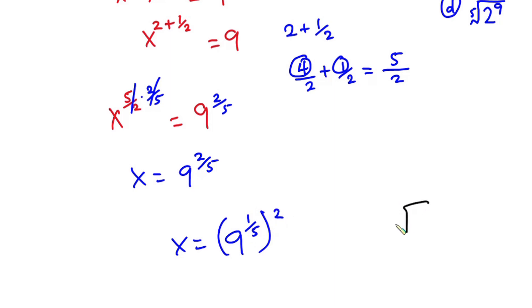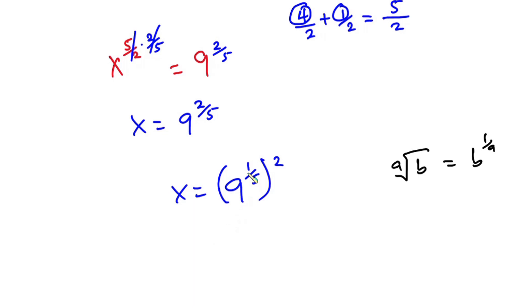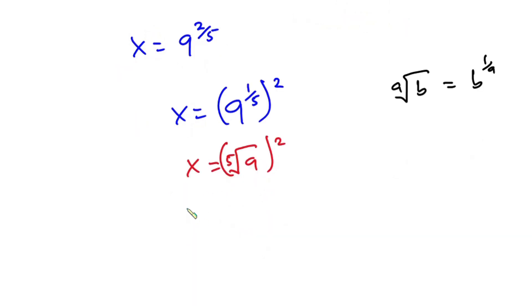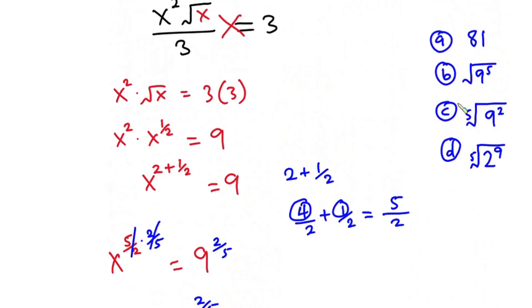If I have the ath root of b, this is the same as b^(1/a). So I can write 9^(1/5) as the fifth root of 9, then to the power 2. This can be written as x equals the fifth root of 9², which is option C.